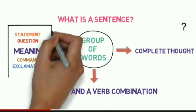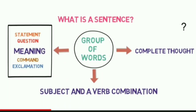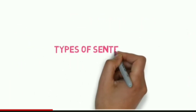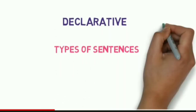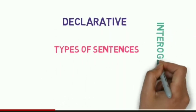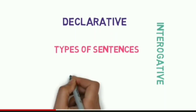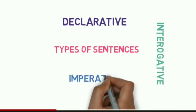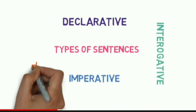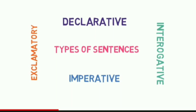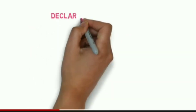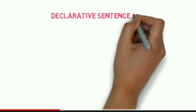Based on different meanings or thoughts, sentences are mainly divided into four types: first, declarative sentences; second, interrogative sentences; third, imperative sentences; and fourth, exclamatory sentences. Let's understand each of them.